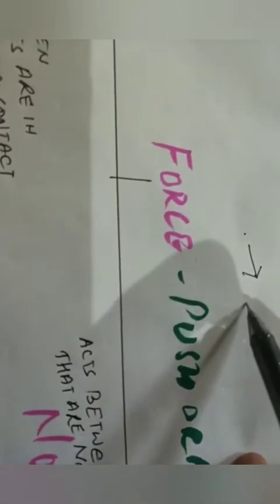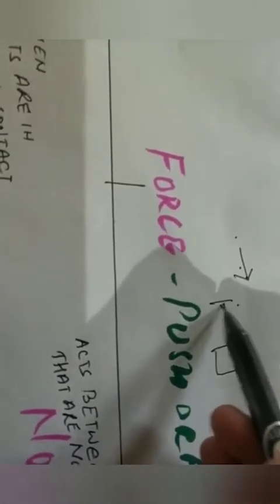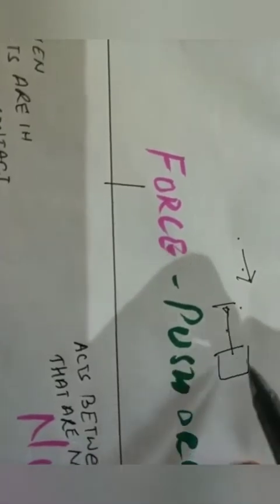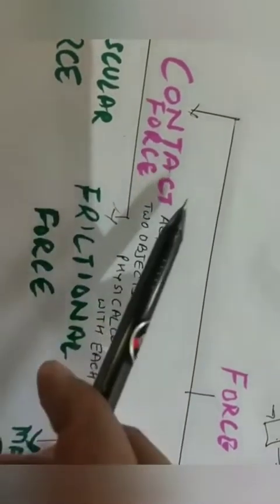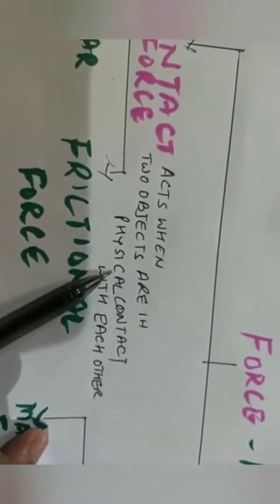Force is a push or pull. When we push something, we are touching that object directly. When we pull something with a rope, the rope is in contact with our hand and with the object — so there is direct contact. Similarly, pulling a bucket from a well involves direct contact. Forces that act when two objects are in physical contact with each other are called contact forces.